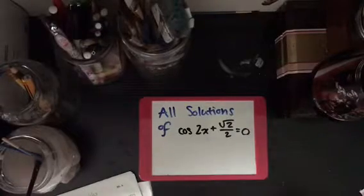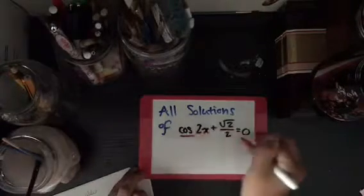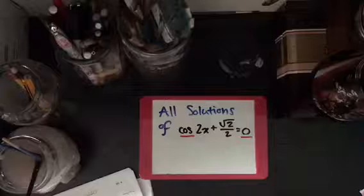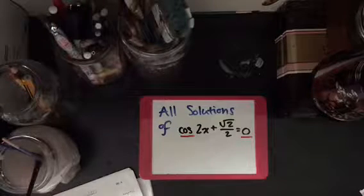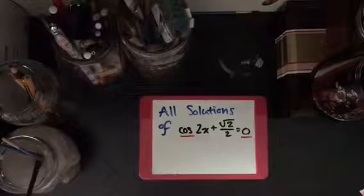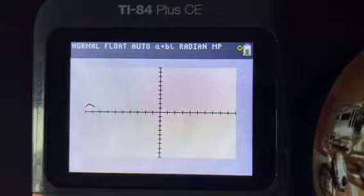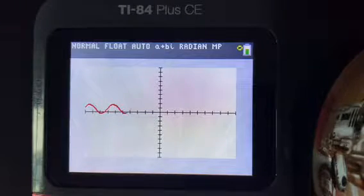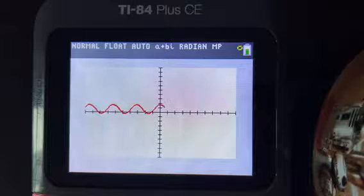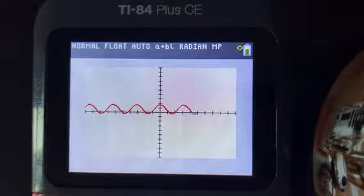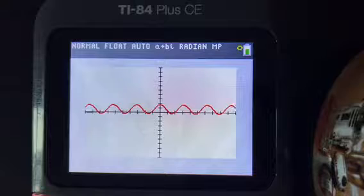So this problem is cosine 2x plus square root 2 over 2 equals 0. Cosine determines what the graph is going to look like and 0 is where they intersect. So if you were to graph this it would look like this and it takes its time making it because you know nobody's in a hurry while they're graphing. It's not like the SAT is a thing.